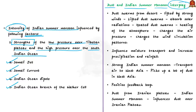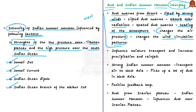Dust swarms from deserts are lifted by strong winds. These lifted dust swarms absorb solar radiation and become hot. The heated dust swarms in the atmosphere cause atmospheric heating, which changes air pressure in the system and ultimately changes wind circulation patterns. These events finally influence the transport of moisture and increase precipitation and rainfall.